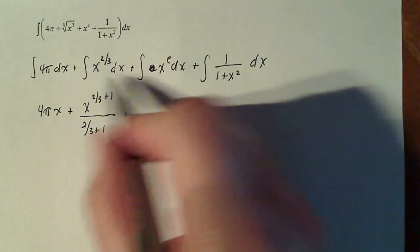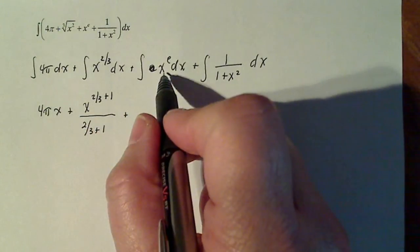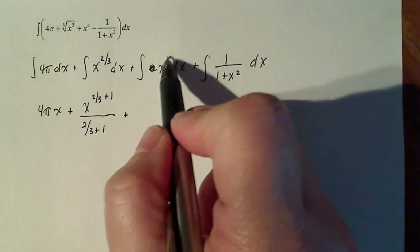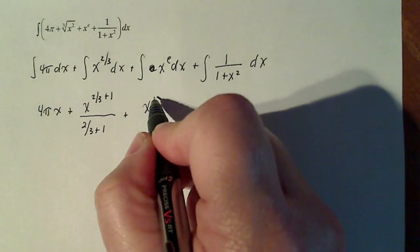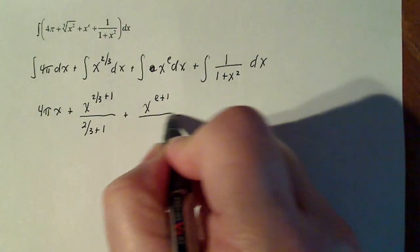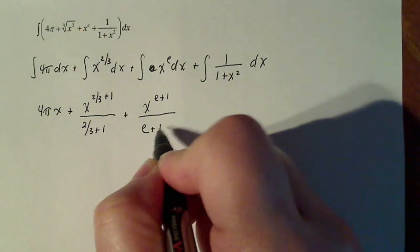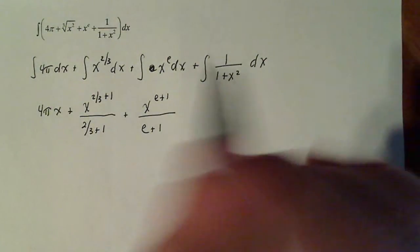And this is also, these two actually exact same types of problems. You've got a variable to a power that is a constant. So I'm going to use the same rule, e plus one divided by e plus one. Don't estimate e, just leave it e, just like you would pi.